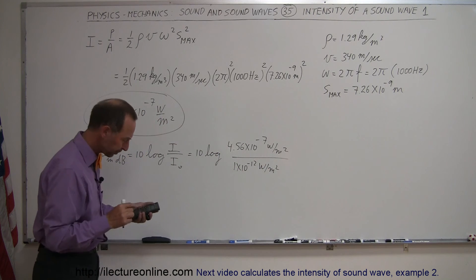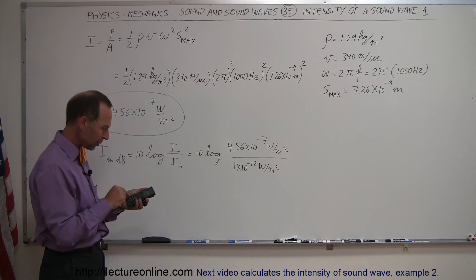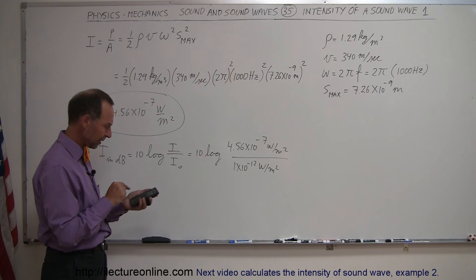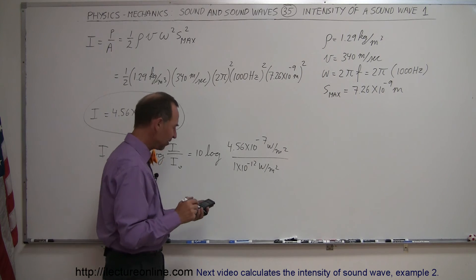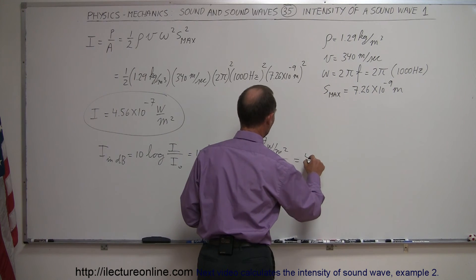So we'll take that number, divide by 1 times 10 to the minus 12, then we take the log of that, and we multiply times 10, and we get 56.6 decibels.